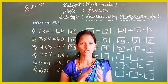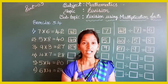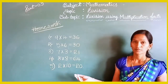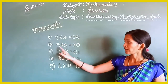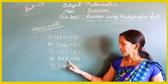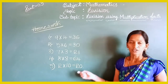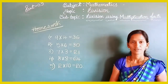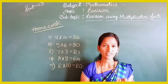I hope you all enjoyed this class. In the next class I will come with a new concept. Now it is time for homework. Write down: first, 9 into 4 equals 36; second, 5 into 6 equals 30; third, 7 into 3 equals 21; fourth, 8 into 8 equals 64; fifth, 8 into 10 equals 80. You have to write down the division facts for these multiplication facts. Goodbye students, have a beautiful day.